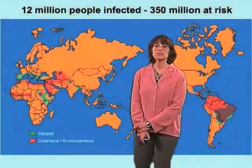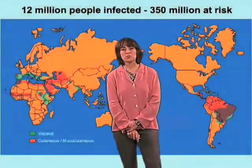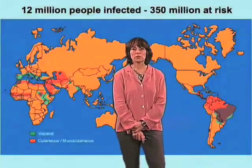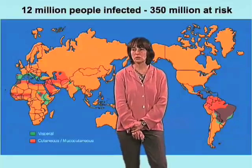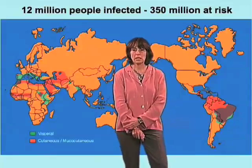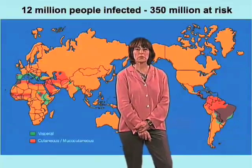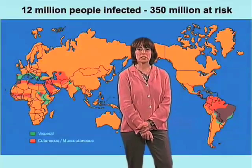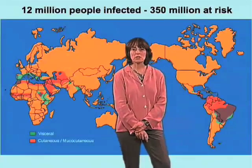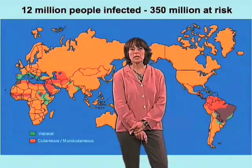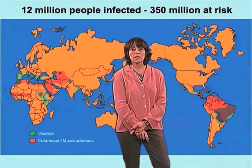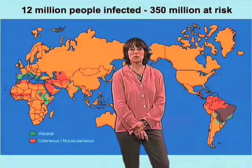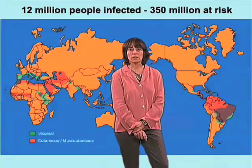Here, in the distribution of Leishmania throughout the world, we can see that it's not only restricted to South America, like Chagas disease, but it's also found in many regions of Africa, the Middle East, and also around the Mediterranean.